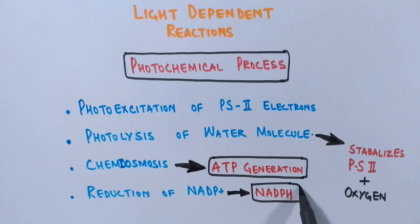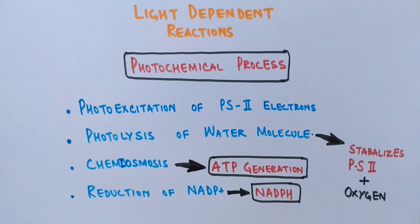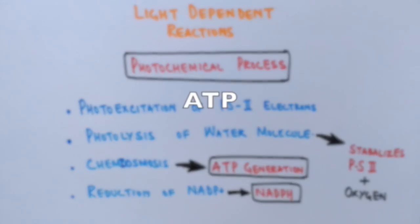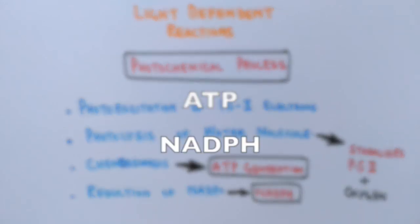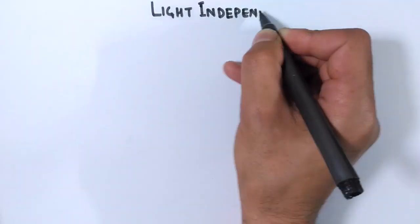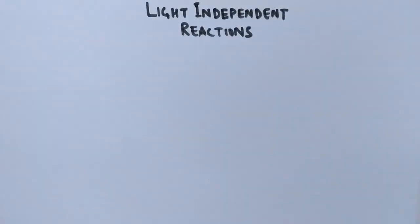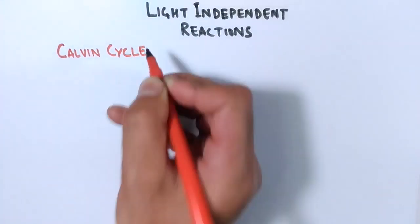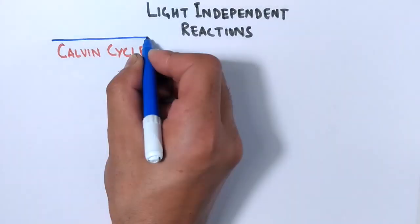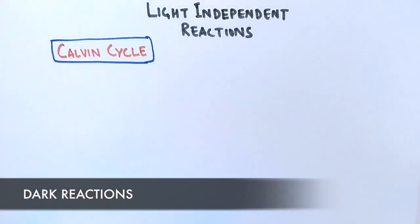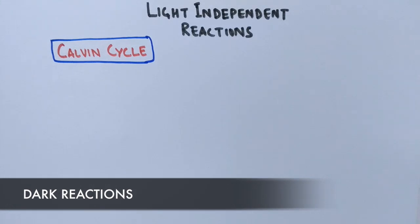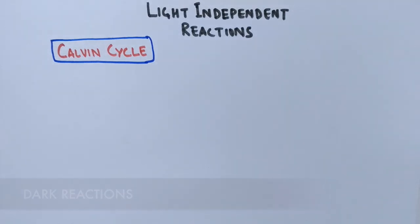Ultimately, two key products from the light-dependent reactions are needed for the light-independent reactions: ATP and NADPH. These will be used for the Calvin cycle — the light-independent reactions. Previously called 'dark reactions,' this is now considered an invalid term since these reactions can occur around the clock.